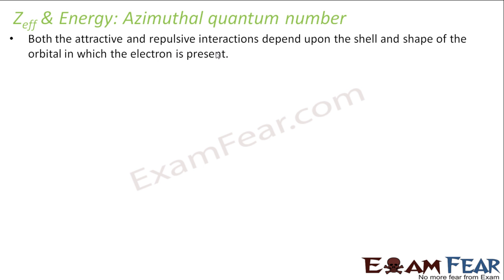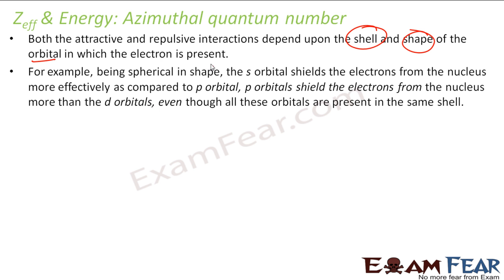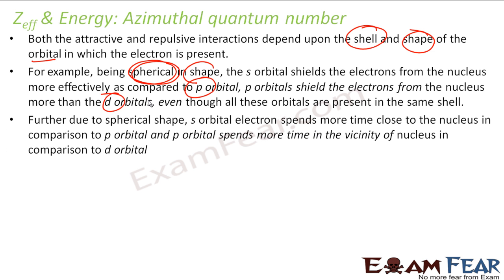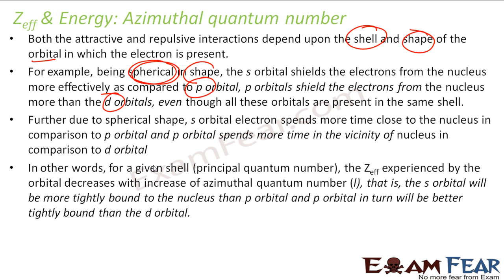The shielding effect does not depend only on N — it also depends on L. All the attractive and repulsive interactions depend on the shape of the orbitals. For example, the spherical S orbitals shield more because electrons in the S orbital get more chance to be near the nucleus compared to P or D orbitals. So if it is an S shell, it will shield the outer electrons more than P or D. The effective Z experienced by the orbital decreases with an increase in the azimuthal quantum number L. So the S orbital will be more tightly bound to the nucleus than the P orbital, and P in turn more than D.